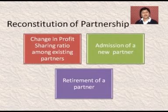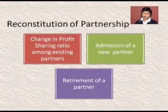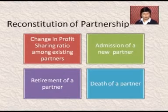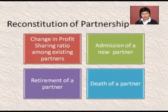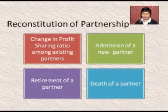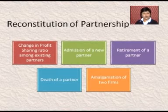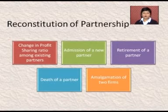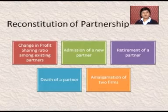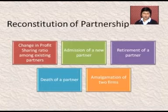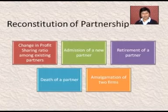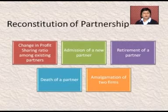Third case is retirement of a partner — jab koi partner business mein se retire ho jata hai. Fourth case, death of a partner — kisi partner ki achanak death ho jaye, toh phir partnership kya karegi us case mein. Fifth case is amalgamation of two firms — jab doh firms amalgamate hoti hai, us case mein partnership ki position kya rehti hai. So, these are five cases when the partnership firms are reconstituted.